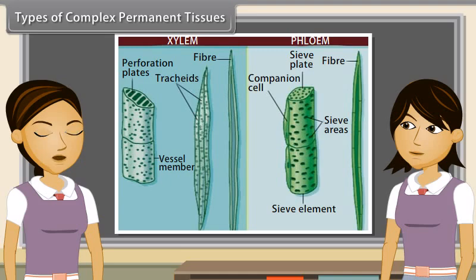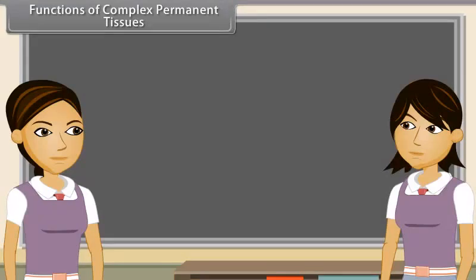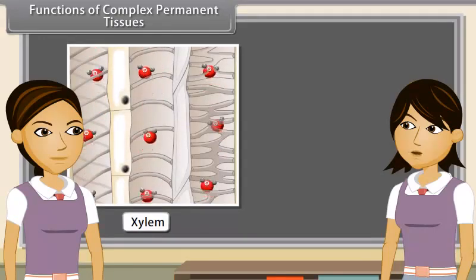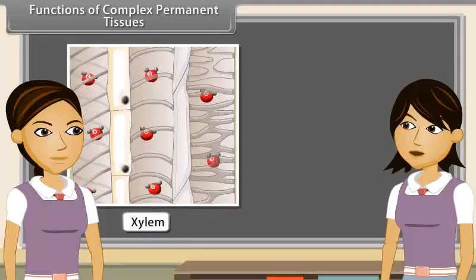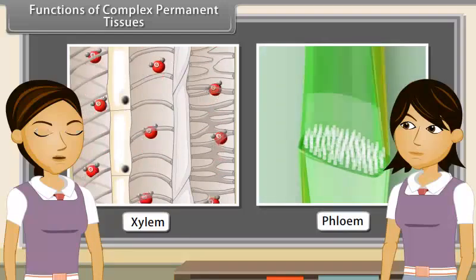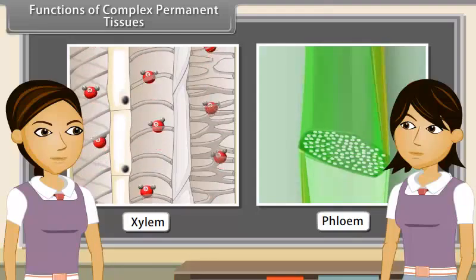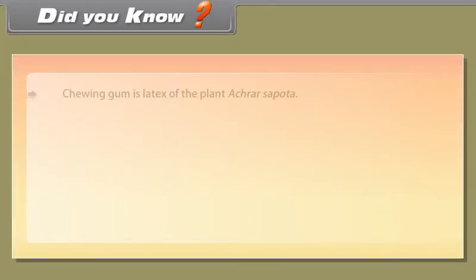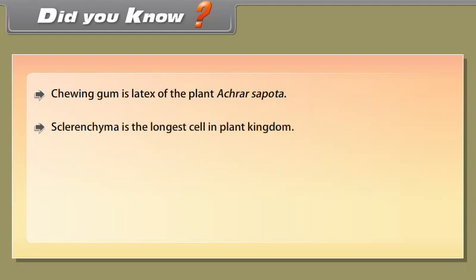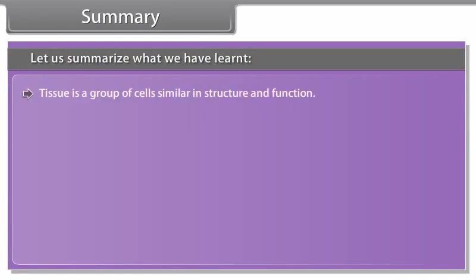Complex tissues are made of more than one type of cell, and all these cells coordinate to perform a common function. On the basis of the nature of cells, complex permanent tissues are of two types: xylem and phloem. Xylem is the supporting and water-conducting tissue of vascular plants, consisting primarily of tracheids and vessels — woody tissue. Phloem is the food-conducting tissue of vascular plants, consisting of sieve tubes, fibres, parenchyma and sclerides, also called bast. The main function of xylem is to carry water and mineral salts upwards from root to different parts of shoots. Phloem transports photosynthetically prepared food materials from the leaves to storage organs, and later from storage organs to the growing regions of the plant body.